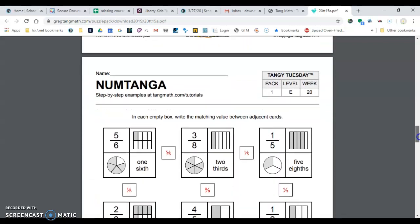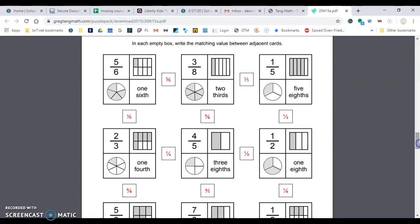All right, NumTanga. Mrs. Twinter is going to read just going straight across. So row one is five-sixths, one-fifth, row two, one-sixth, three-eighths, one-third.